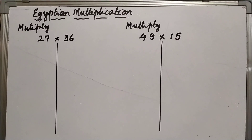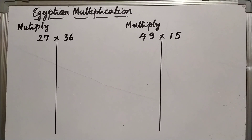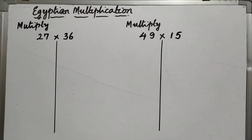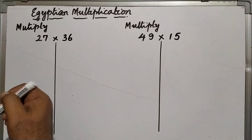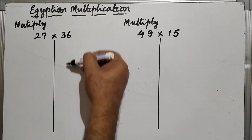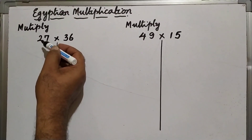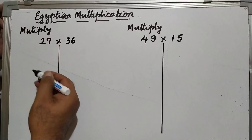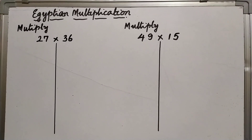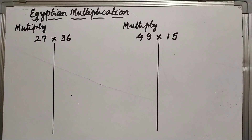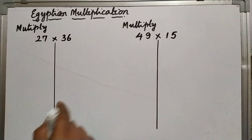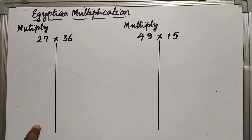A slight change in the original Egyptian multiplication is incorporated here. For example, we need to multiply 27 and 36. What we will do is, 27 is considered as one of the columns and 36 is considered as the second column. In the first column, we will start dividing by 2, and if we get a fraction, we will omit the fraction — we divide until we reach 1. In the second column, we will multiply by 2 correspondingly, and stop when we reach 1 in column number 1.